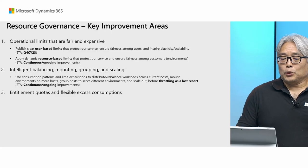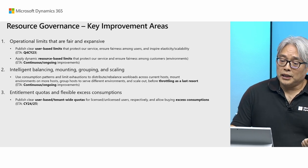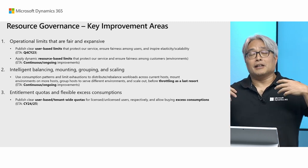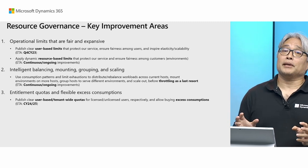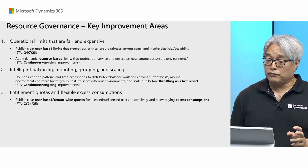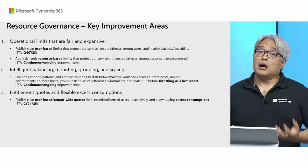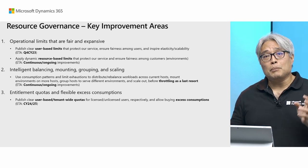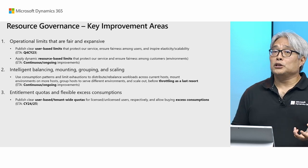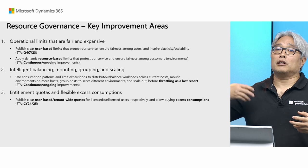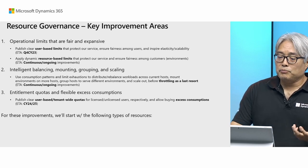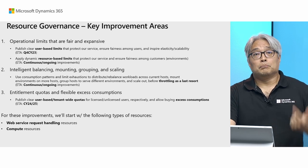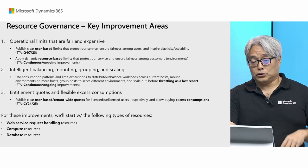Finally, we want to introduce entitlement quotas and flexible access consumption. We will publish user-based and tenant-wide quotas for licensed and unlicensed users respectively, and allow buying access consumption. This should happen in the next two or three semesters from now. The aim is that 99% of our customers will be able to consume resources under their quota. For customers who want to exceed their consumption, we will allow options to buy more add-on capacity or pay-as-you-go for excess consumption. These improvements will be applied across many resource types, focusing first on web service requests, then compute resources, then database and storage resources.